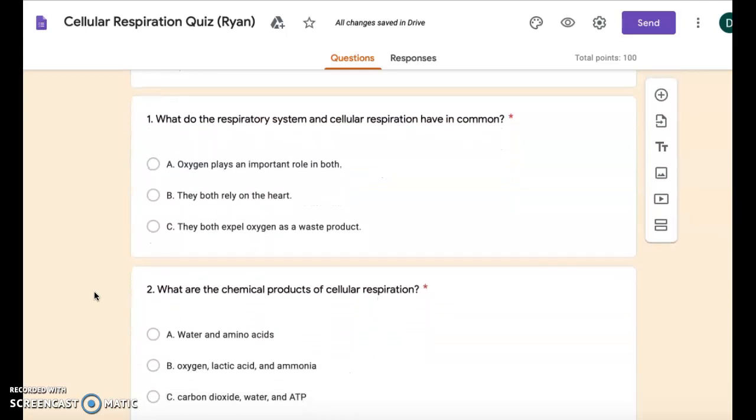Number one: What do the respiratory system and cellular respiration have in common? A: oxygen plays an important role in both. B: they both rely on the heart. C: they both expel oxygen as a waste product.